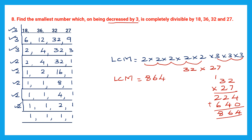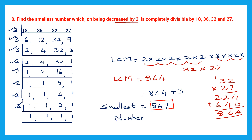So 864 is the number that can divide 18, 36, 32 and 27 completely. But the question asks for the smallest number which on being decreased by 3 gives a result divisible by those numbers. So if you decrease 3 from the answer, you must get 864. That means the number is 864 + 3 = 867. If you decrease 3 from 867, you get 864, which is divisible. So the smallest number is 867.